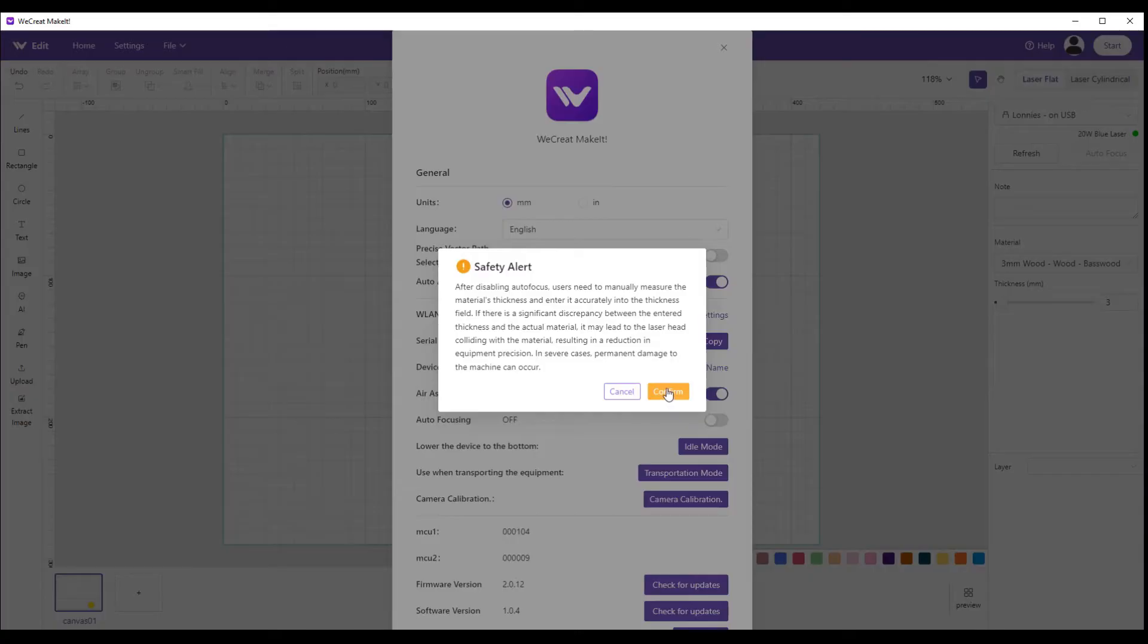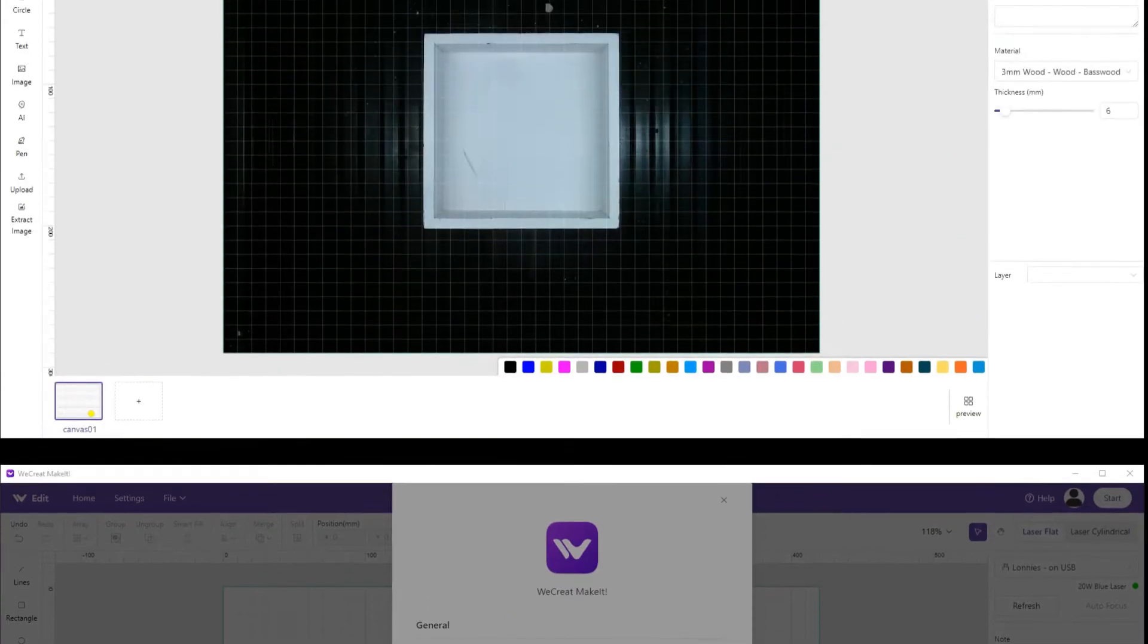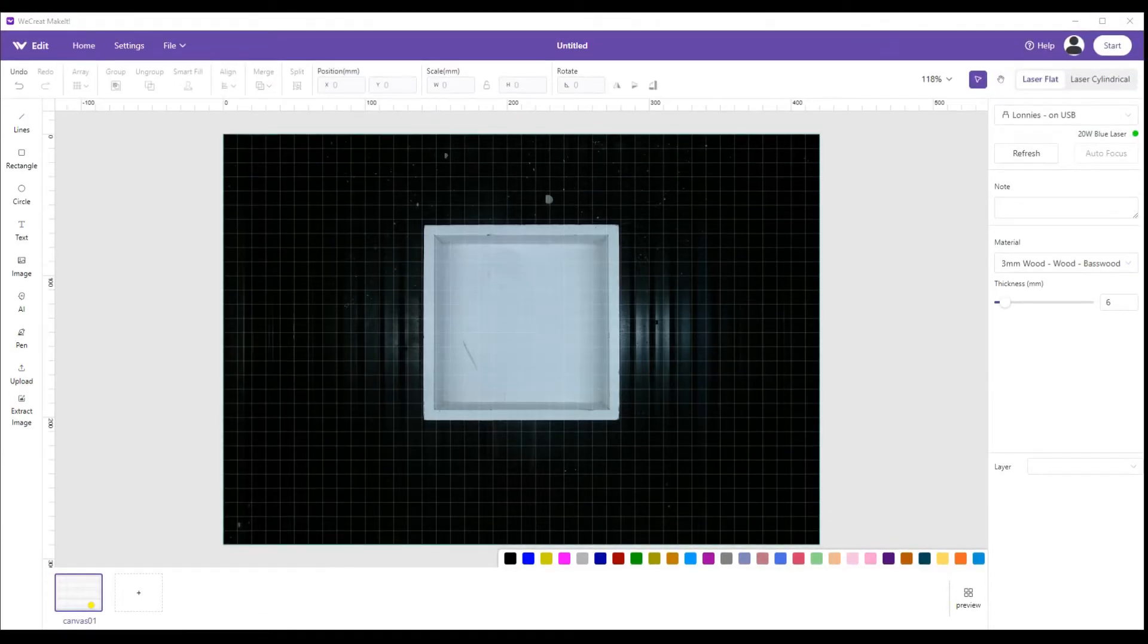Okay, now you notice after you turn autofocus off you get a slider over here. This tells you to put in here the thickness of the material. It goes up to 100 millimeters to zero. We're going to plug in six because that is the thickness of the bottom of this board.